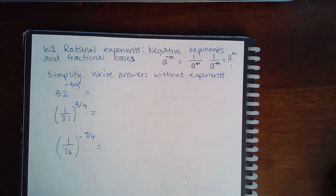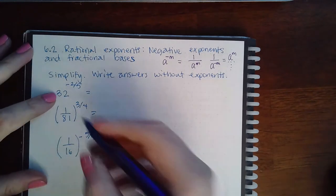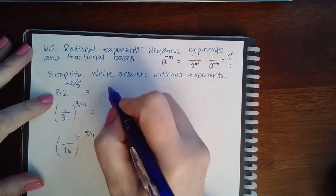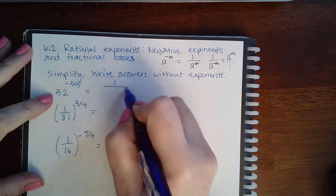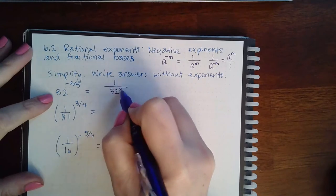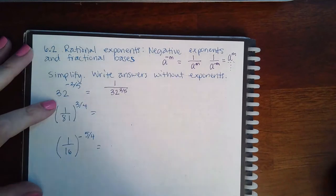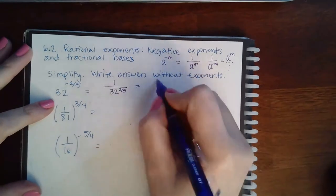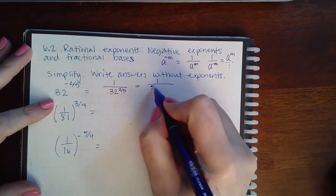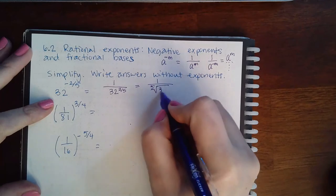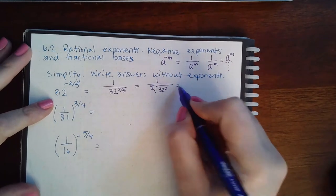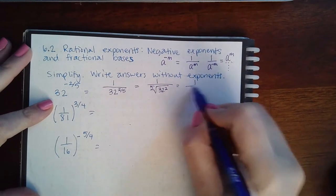For this one, I have 32 raised to negative 2/5, which means this is the same as 1 over 32 to the power 2/5. And then since I have to write it without exponents, I'm going to have to convert this into the fifth root of 32 squared. And I can't have an exponent, so then this is the fifth root of...